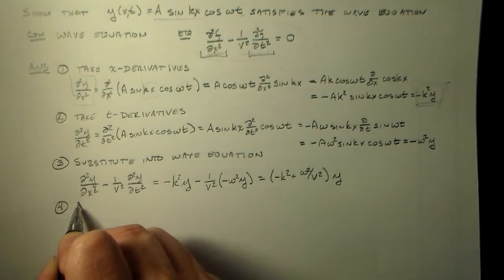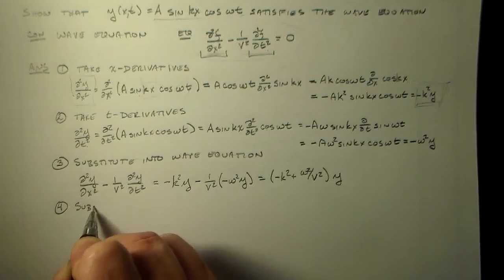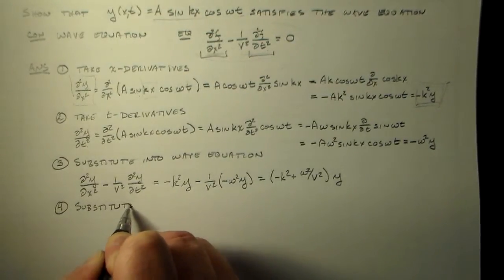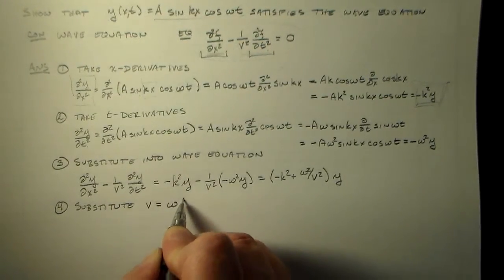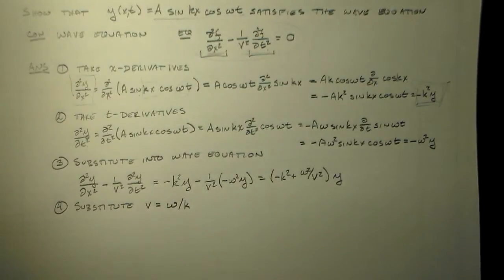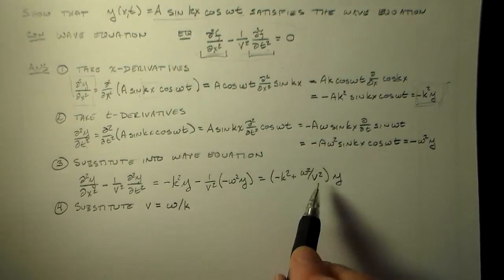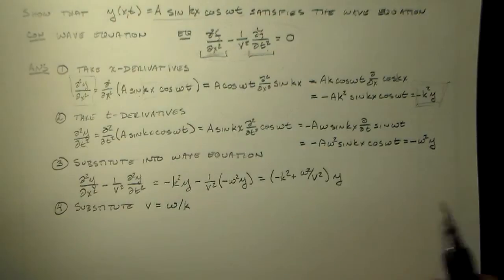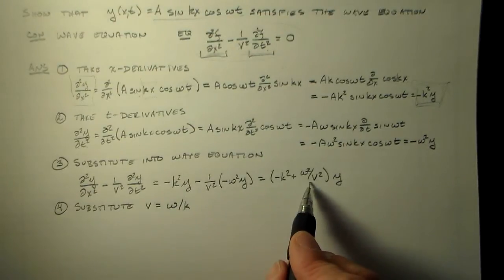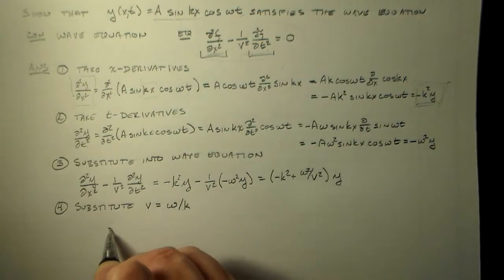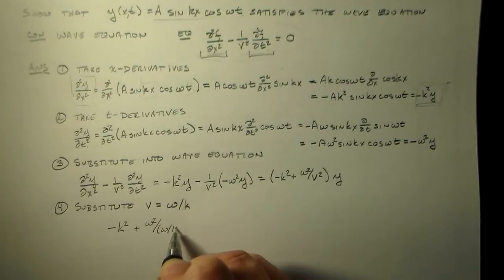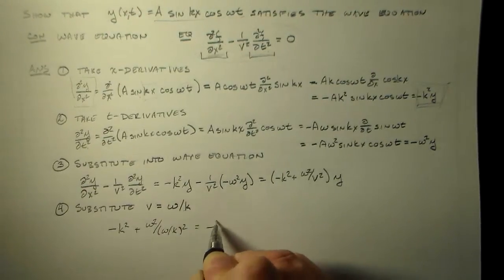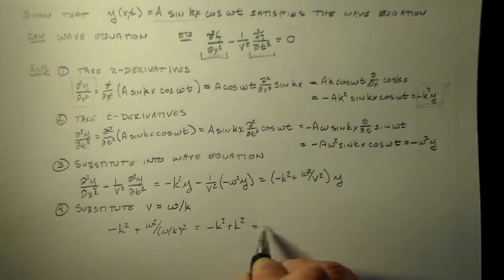Well, let's just remember what that v stands for. So v is equal to omega over k, right? That propagation speed is omega over k. And so if we've got this propagation speed being omega over k, then we can substitute that in here. And we have minus k squared plus omega squared over omega over k squared, which is equal to minus k squared plus k squared equals zero.